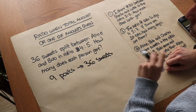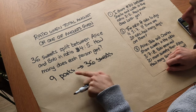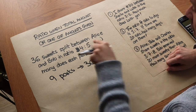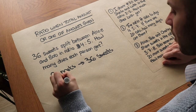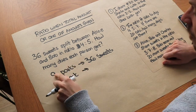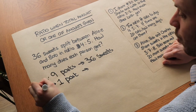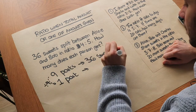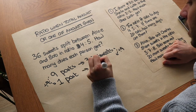Now we want to work out what each person has. Alice has 4 parts and Bob has 5 parts, so we generally go via 1 part. If 9 parts is worth 36 sweets, then 1 part is 9 times less, so we divide by 9, and that means 1 part is worth 4 sweets.